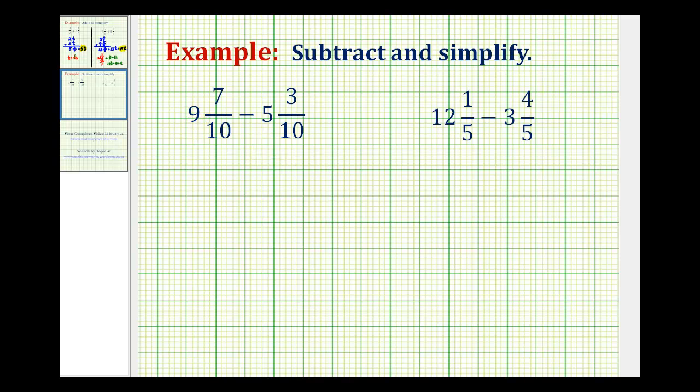For this first example, we'll have 9 and 7 tenths minus 5 and 3 tenths. Now that it's in vertical form, we'll subtract the fractions and then subtract the whole numbers.